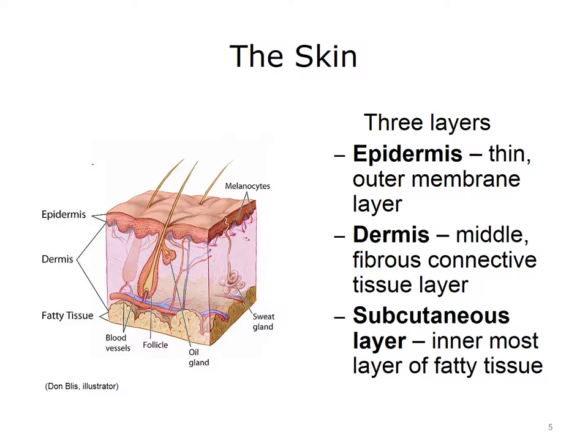The skin is composed of three layers: the epidermis, the dermis, and the subcutaneous layer. The epidermis is the thin outer membrane layer. The dermis is the middle fibrous connective tissue layer. The subcutaneous layer is the innermost layer that is composed of fatty tissue.